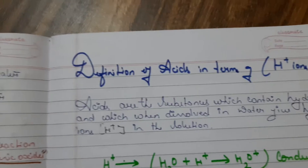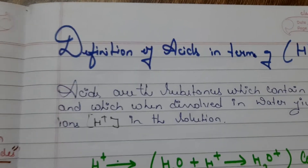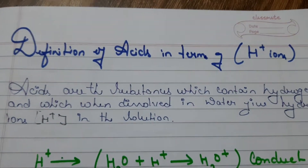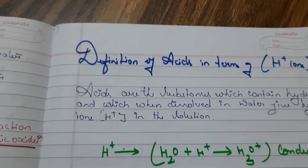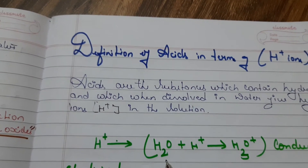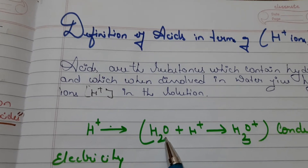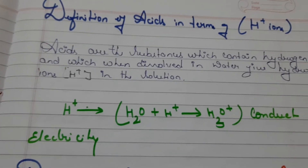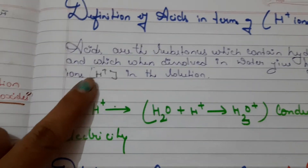Definition of acids in terms of hydrogen ions: acids are substances which contain hydrogen and when dissolved in water give hydrogen ions in solution. Hydrogen ions don't remain free in solution — they combine with water to form hydronium ions (H3O+). This is why acids conduct electricity — due to the presence of hydronium ions.